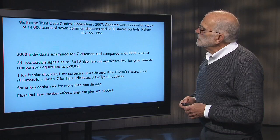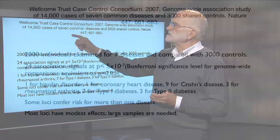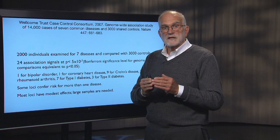The first really major GWAS paper was run by the Wellcome Trust. It came out in 2007 and looked at seven diseases with 14,000 cases and 3,000 shared controls — so 14,000 people had one or more of the seven diseases, and 3,000 did not. They looked at which genetic variants each person had across their whole genome. There were 24 signals of association between genetic variation and disease, and they required a probability smaller than 5 times 10 to the minus seventh to correct for the large number of comparisons being made.